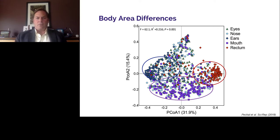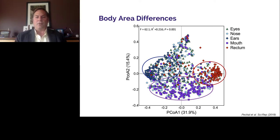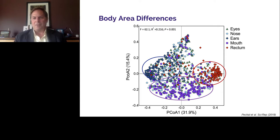What we found was that body area makes a huge difference in the microbial communities. In this ordination — where closer points indicate more similar microbial communities — rectum clusters pretty tightly, the mouth clusters separately on the PCoA2 axis, and ears also cluster significantly. The communities of rectum, mouth, and ears are significantly different from each other. Note that eyes and nose, which are part of the face along with ears and mouth, are spread throughout with more overlap. So body site has an important effect, and looking at body site for your microbial clock was very important.